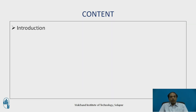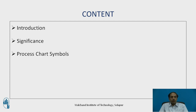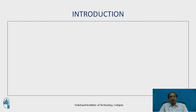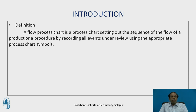The contents of today's session will be: a small introduction, the significance of a flow process chart, the various symbols used, and how to draw the flow process chart. The flow process chart is a process chart setting out the sequence of flow of a product or procedure by recording all events under review using the appropriate process chart symbols.